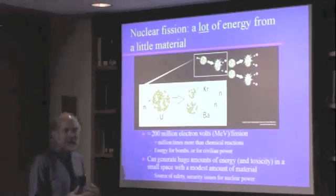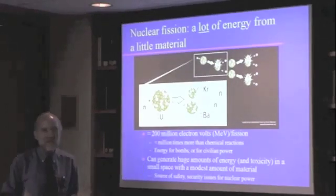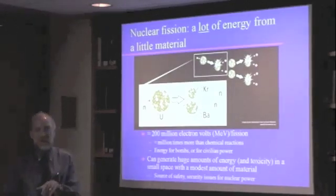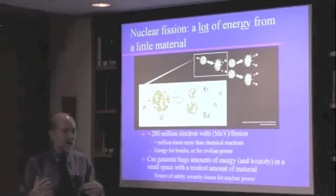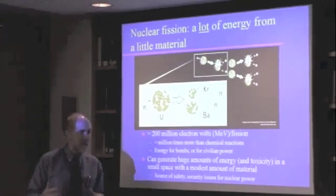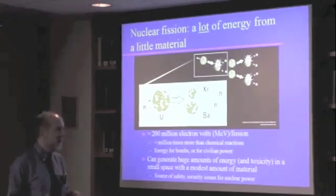And that means that in a nuclear power plant, for example, you can generate a lot of energy with a very small amount of material. If you have, for example, a one gigawatt coal plant, you need about an 80-car train of coal every day.